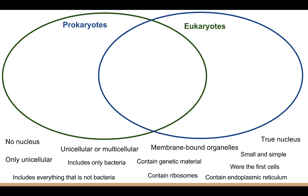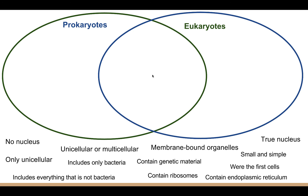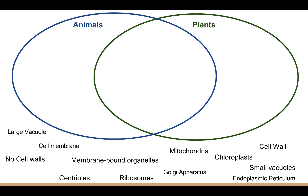In your notes, create a Venn diagram with prokaryotes in one circle and eukaryotes in another. Use the phrases provided to place them in the correct spot — either in the prokaryote section, the eukaryote section, or in the middle if both share that characteristic. Then create a second Venn diagram comparing animal cells to plant cells, placing the words and phrases as belonging to animal cells only, plant cells only, or something both share.